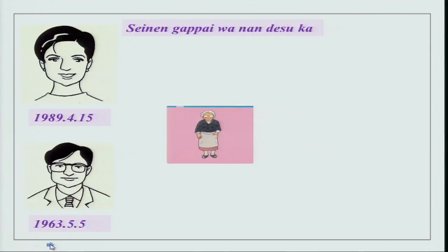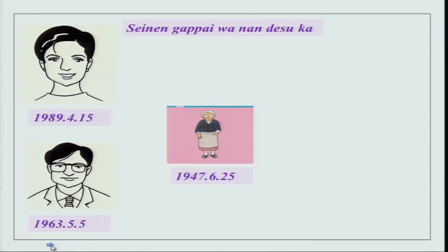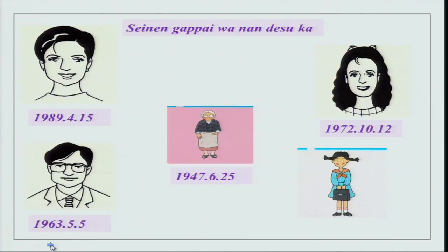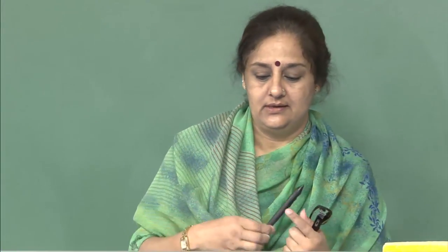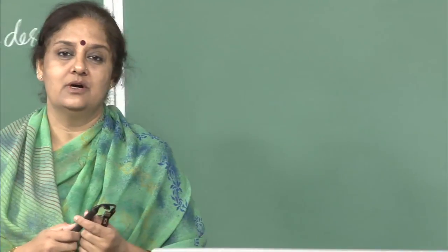This is how you can do your seinengappi — date of birth. It is extremely important because anytime you need to fill a form, that is the first thing you have to do: fill in your name and then your seinengappi. Now, as I told you and promised you earlier in the class, we are going to do verbs — we are going to do verbs in a different way today.